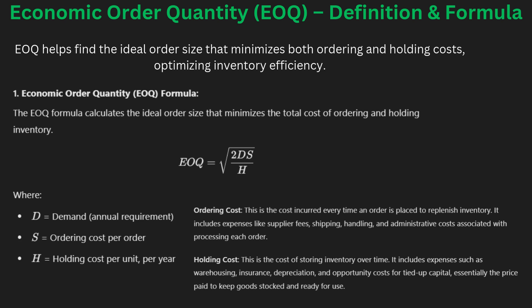On screen you can see an EOQ example. The formula helps determine how much a company should order. By ordering the right amount, the company can reduce both ordering and storage costs. This example shows how a business can apply the EOQ concept to save money and ensure materials are available when needed — simple but extremely effective, and useful for exams as well.